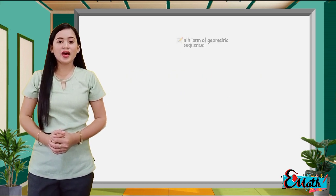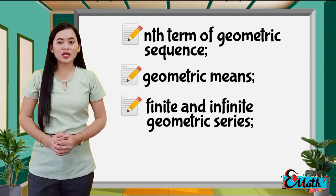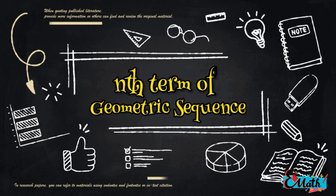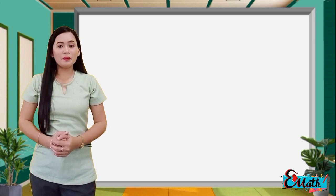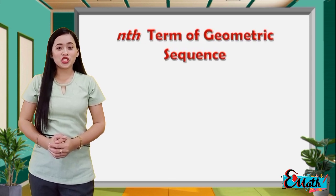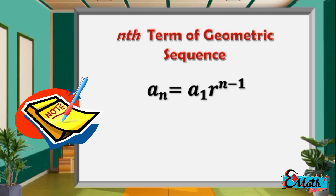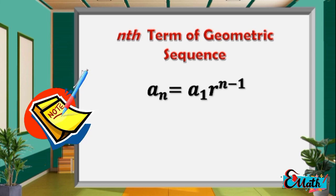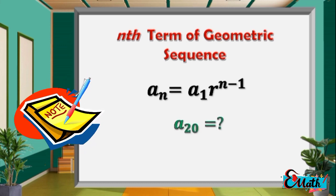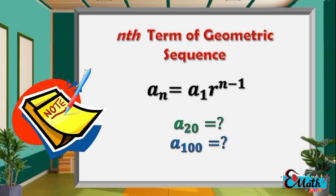Here, we will be dealing with the nth term of the geometric sequence, the geometric means, the finite and infinite geometric series, and the problems involving them. Previously, in episode 2, I partly introduced to you the formula in getting the nth term of a geometric sequence, which is a sub n equals a sub 1 times r to the power of n minus 1. Getting the nth term means finding any term of a given geometric sequence. For example, when we get the 20th term or a sub 20 or the 100th term or a sub 100, we can get this right away by applying this formula.